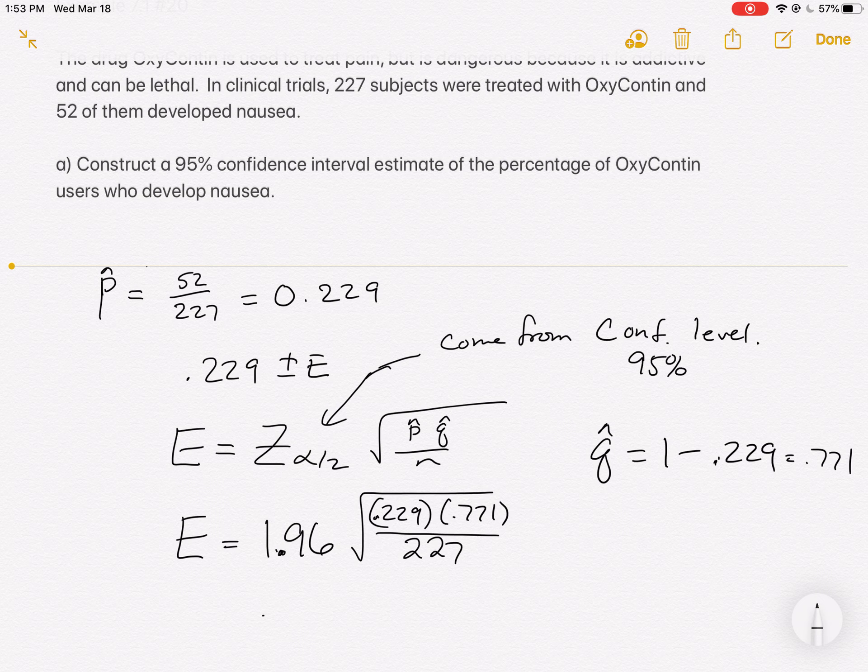Let's on our calculators take 1.96 times the square root. 0.229 times 0.771 divided by 226. Make sure that's all underneath the square root. And it should be 227. So let me fix that. And then hit equals.